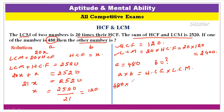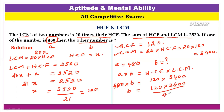Substituting the known values: 120 × 2400 = 480 × B. So B = (120 × 2400) / 480. We cancel 120 and 480 — 480 divided by 120 is 4. So B = 2400 / 4 = 600. Therefore, the second number is 600.